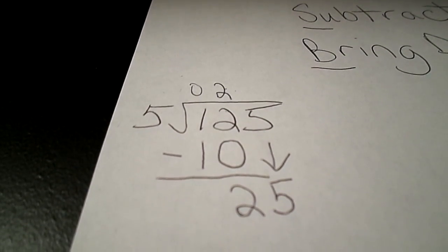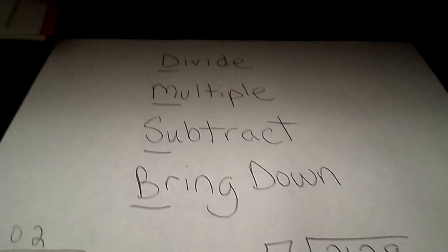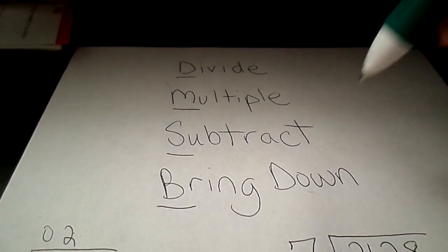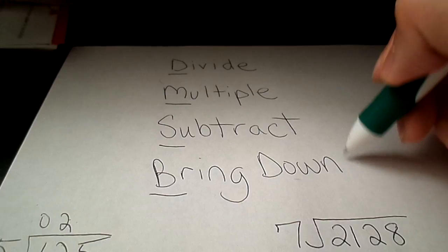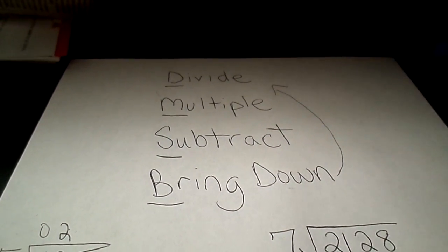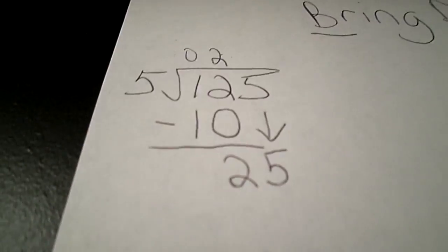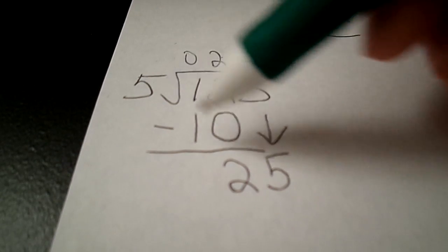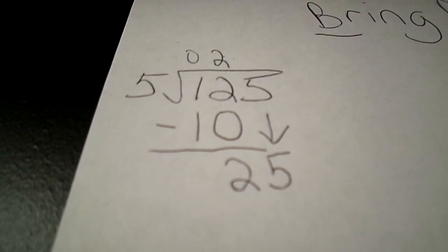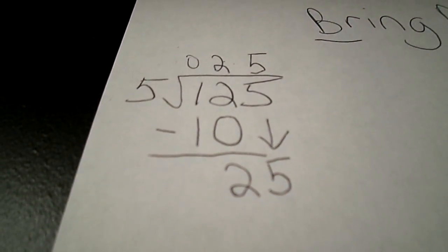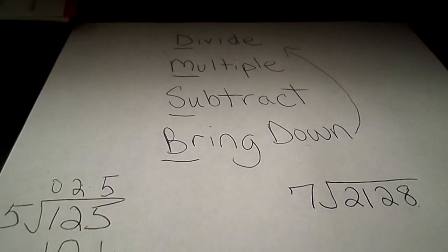And we have to repeat. So what we're doing now is we went through all four of the steps and after bring down we go back up to divide and start over. So now we're at 25 divided by 5 and that is 5. Then we continue.